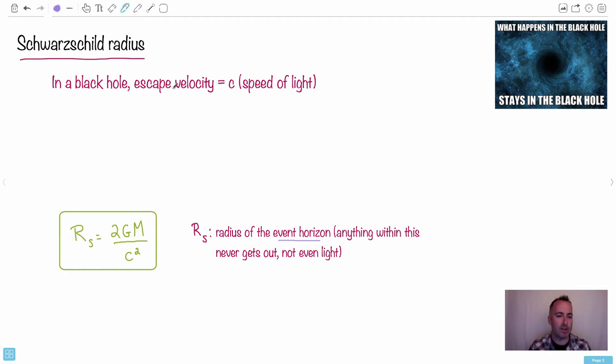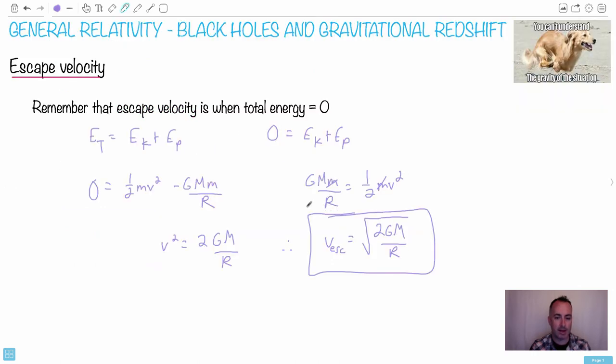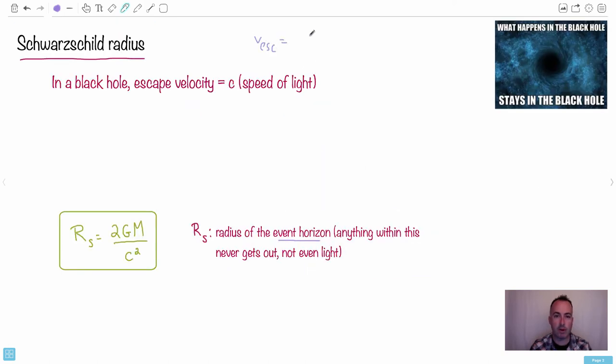So in a black hole, what we do is we set the escape velocity to be equal to c, the speed of light. And do you remember what we had here? We had that the escape velocity is square root of 2GM over r. So I'll write that down again. So v escape, just to remind us, is square root of 2G capital M over r, where r is the radius, M is the mass, G is the gravitational constant.